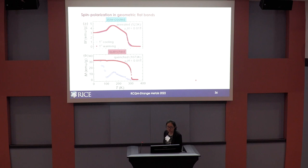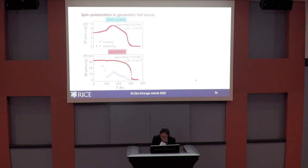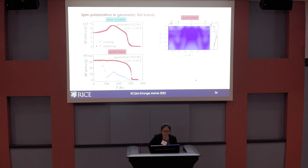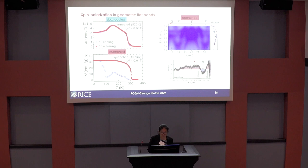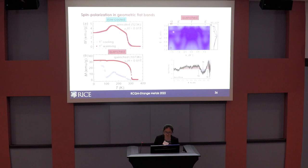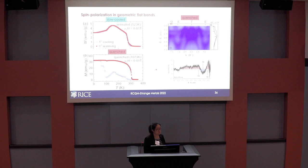The last experiment I want to show is spin-resolved ARPES on the quenched crystals, addressing why quenched crystals have a slightly higher Tc. Measuring in the ferromagnetic state at low temperature, with EDC cuts where peaks correspond to the three flat bands, spin-resolved measurements show that the flat bands carry opposite spin polarization — at least for the band crossing the Fermi level and the one around 250 meV. This suggests that these flat dispersions, which we understand as arising from geometric frustration, do perhaps contribute to the magnetization in these materials.